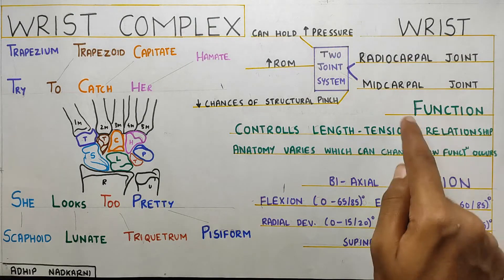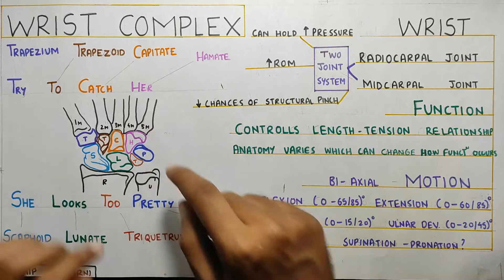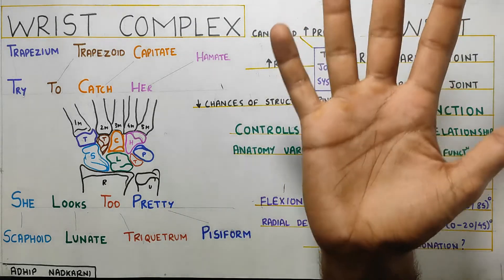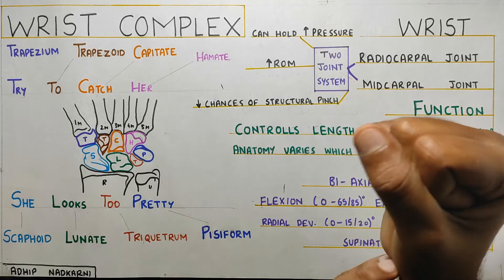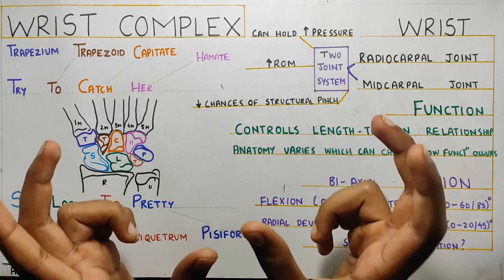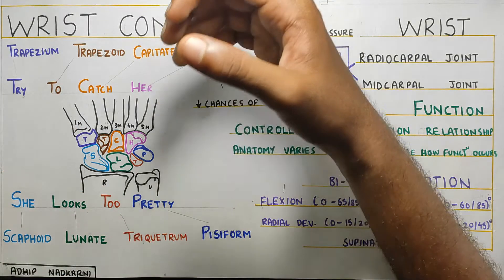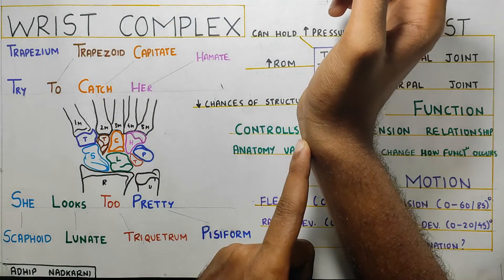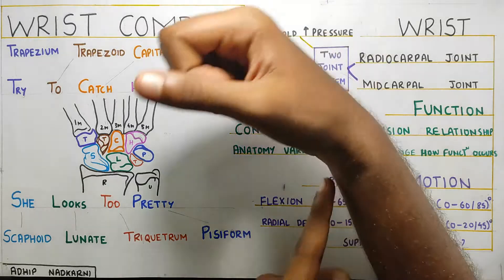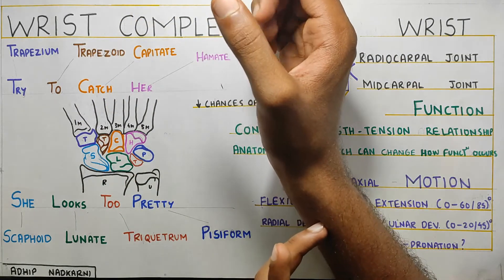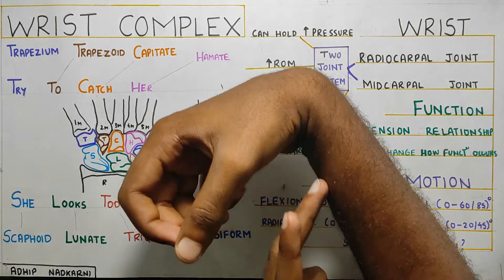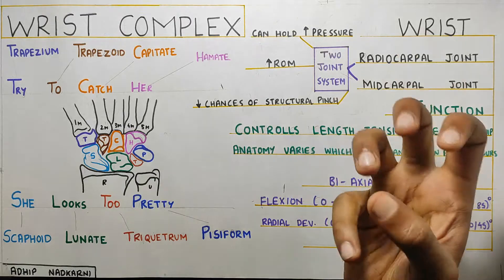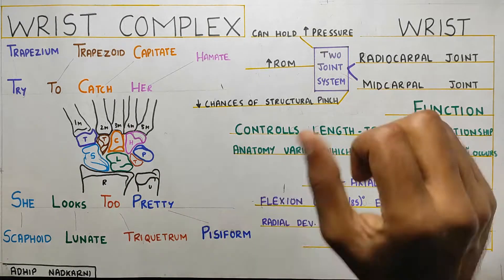The main function of the wrist joint is controlling the length-tension relationship. Your muscles from the forearm cross the wrist joint and attach at the hand. To create force at your hand, you need an optimal length-tension relationship. For example, if you flex your wrist and then try to grasp something, it's not as strong compared to when you extend your wrist and then grasp. When the forearm flexors are in a lengthened position, you can generate force much better. This controls fine motor strength, fine grip adjustments, and balance and control at the distal part of your hand.